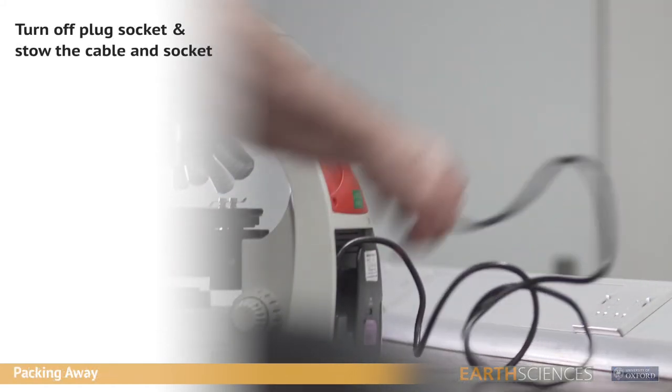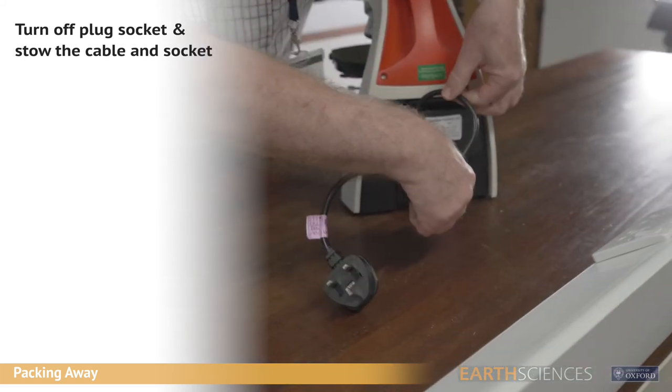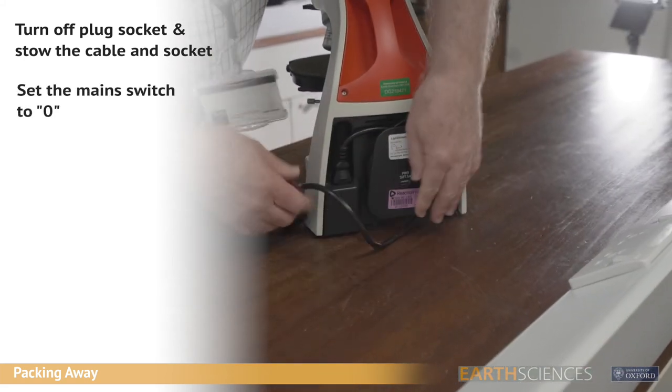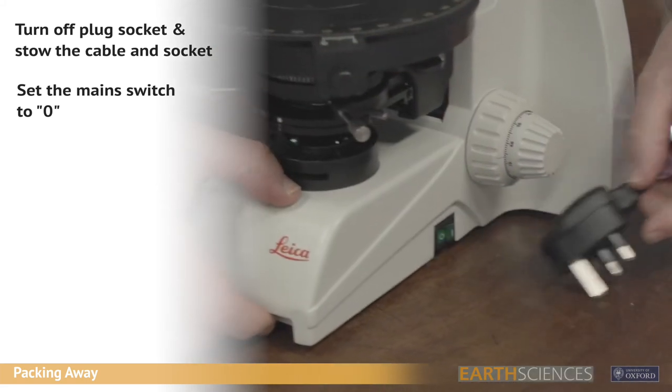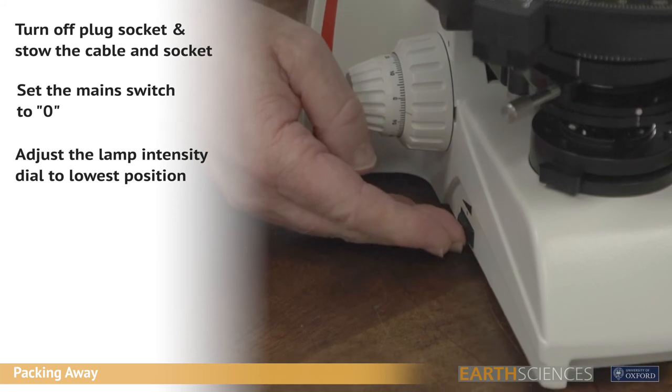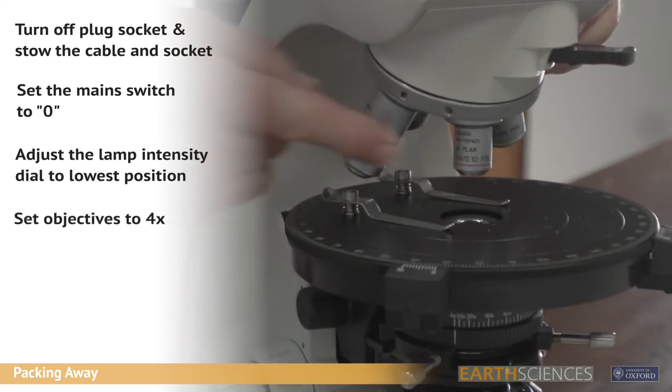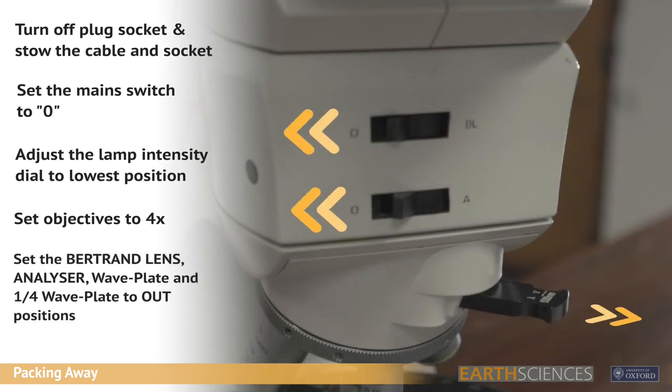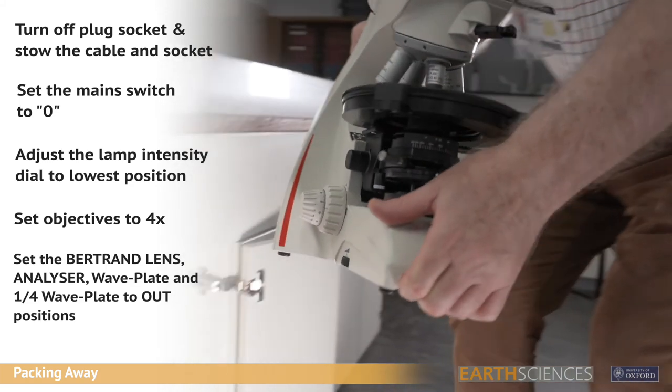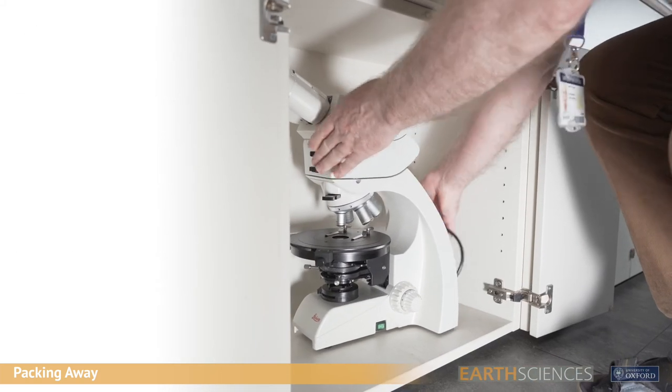When packing away, turn off the plug socket and stow the mains cable and socket in the cable tidy at the rear of the microscope. Set the main switch to zero and adjust the lamp intensity dial to the lowest position. Check that the objectives are set to 4x magnification and that the analyzer, Bertrand lens, wave plate and quarter wave plate are set to the respective out positions. Finally, stow the microscope in its originating cupboard.